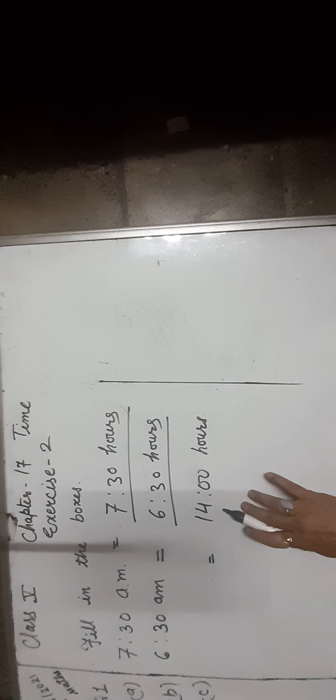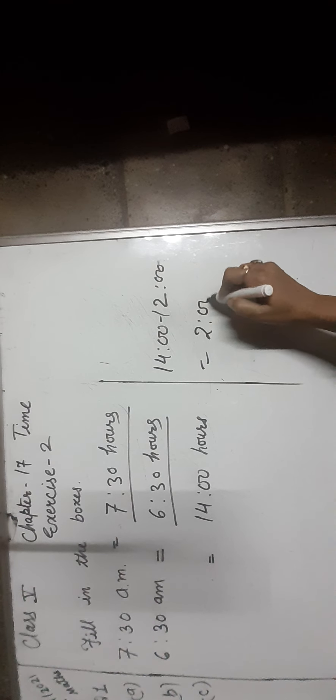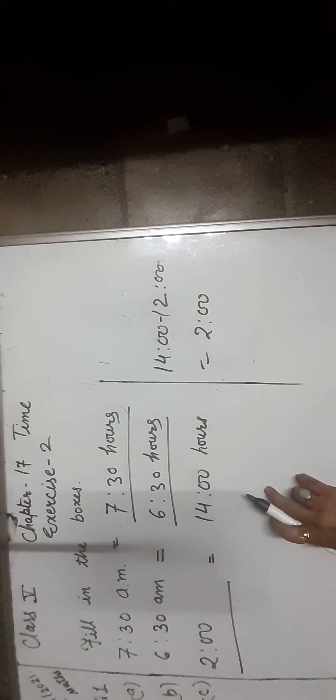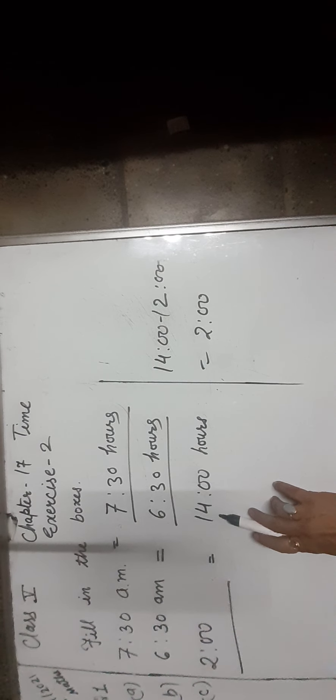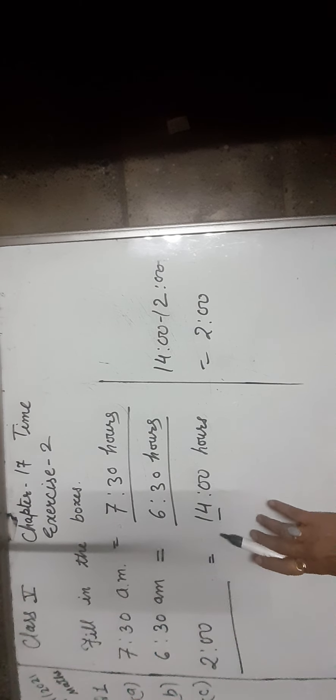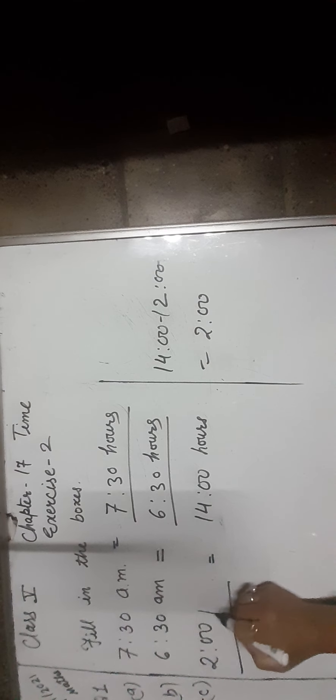Now let us convert 14 hours into 12-hour clock time. To convert, subtract 12 from the hours. So, 14 minus 12 equals 2 — that is 2 o'clock. To find whether it is AM or PM: if the number on the left of the 24-hour clock time is more than 12, the time is in PM. Here, 14 is greater than 12, so the time is 2 PM.